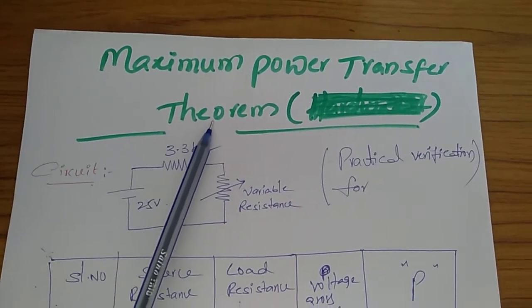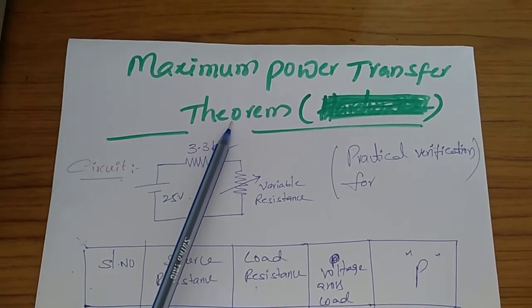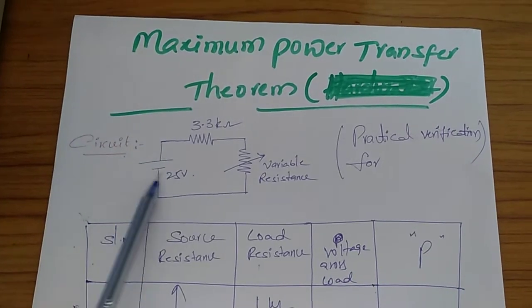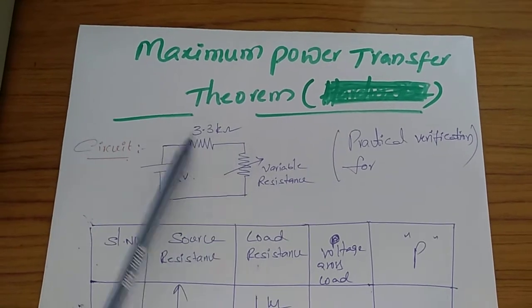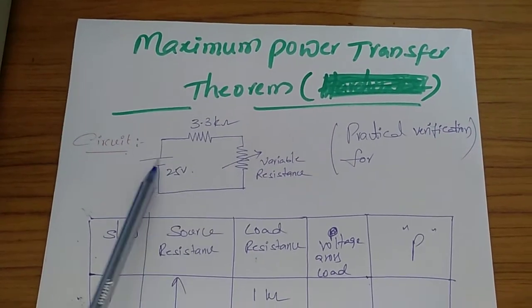So what is maximum power transfer theorem? Maximum power transfer theorem states that in an electrical network, the maximum power is delivered from source to the load when load resistance is equal to source resistance. When these two values are equal, then maximum power is delivered to this load from this source.